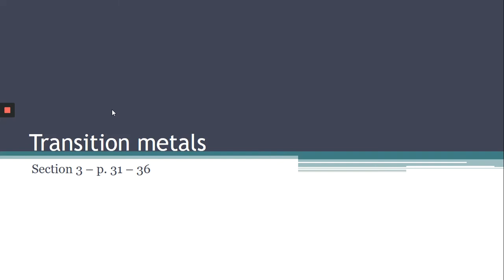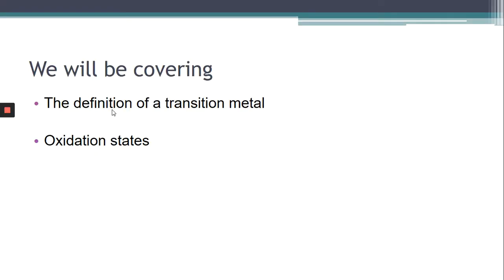When you did the transition metal class paper questions, there were one or two things that hadn't been picked up as you went through the slides. So I thought I'm going to do this and see if it gives us a bit of a hand. First, we're looking at what the true definition of a transition metal is. It's not just that it's found between group 2 and group 3 of the periodic table, and we're going to be looking at oxidation states.